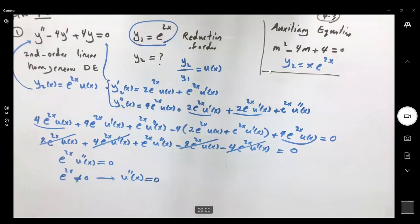Let's use a simple substitution. Take w to be u prime. So w prime is the second derivative of u. What do we get? We get w prime at x equal to 0.